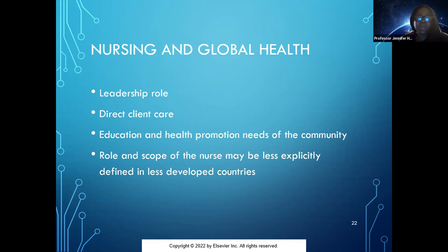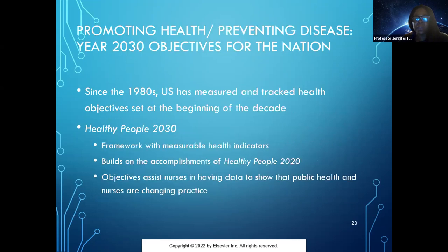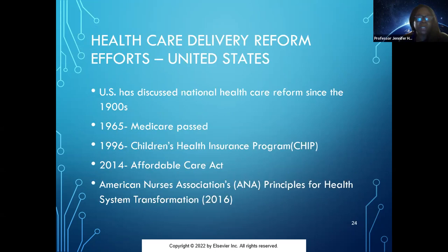As nurses, especially professional registered nurses, we are leaders and will be looked upon as role models for improving the health care of the population. Healthy People 2030 is a great framework — all of the Healthy People iterations are further defined every decade to help you be aware of the indicators being focused on. The American Nurses Association has been involved and has been an advocate in debates about health care delivery for many years.